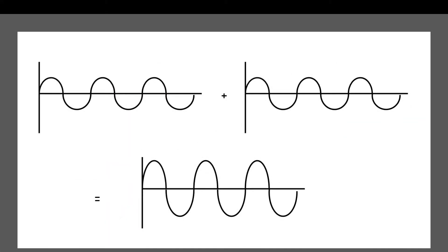In the previous video, I went through some of the wave basics, things that you need to know about waves. So far, we've only considered single waves and their properties. But what happens when two waves meet? This is what the principle of superposition is. Let's look at some examples to illustrate it, and then we'll come up with the principle.